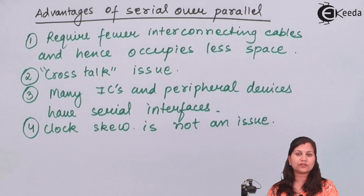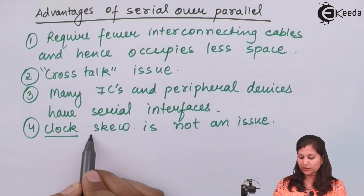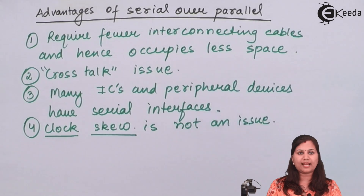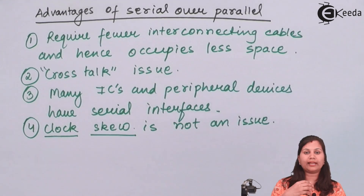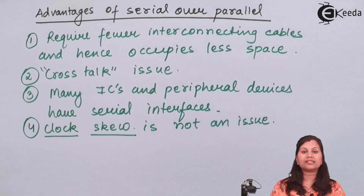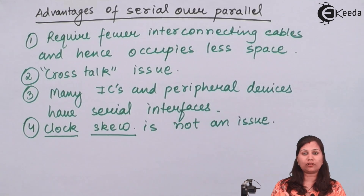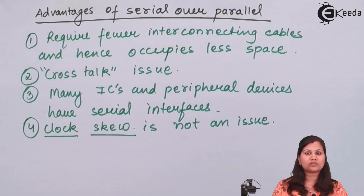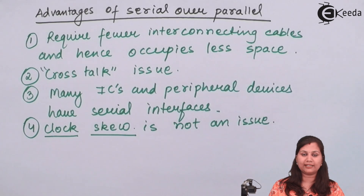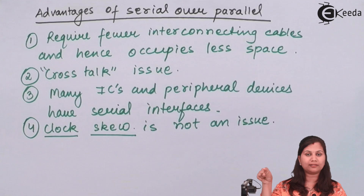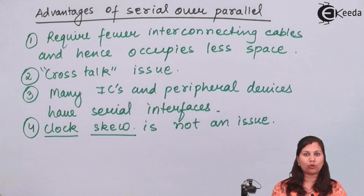Another phenomenon that occurs in data transmission is called clock skew. In computers and microprocessors, different blocks and components all require the clock signal. When the clock signal is transmitted to each component, it may arrive at different times to different components — this problem is called clock skew. Clock skew is not an issue in serial transmission because a single wire transmits the clock signal, so it reaches all components at the same time.